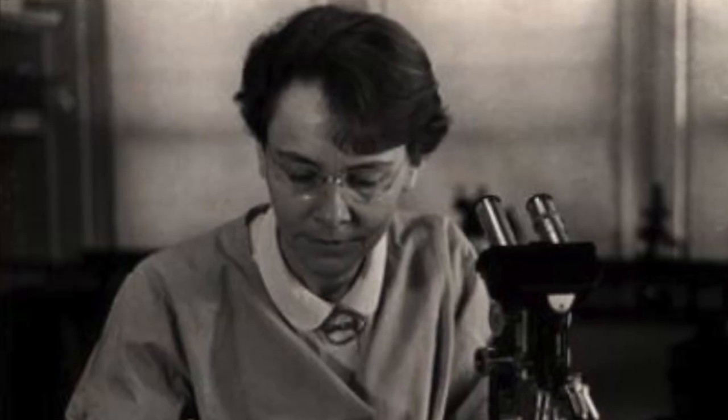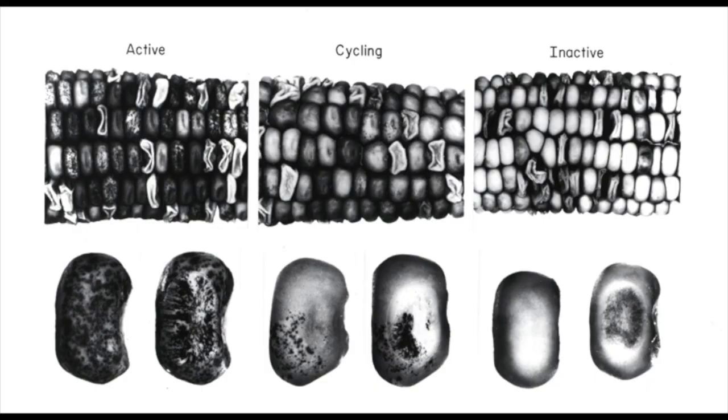Barbara McClintock is a scientist from the 1940s. She was very respected — she developed important techniques using microscopes, studying chromosomes, genetics, and all kinds of stuff. She basically hacked a corn plant and got it to evolve in real time. This paper by James Shapiro was explaining cellular error detection, error correction, and repair mechanisms — all things that communication engineers know about, things that are in your router or your cell phone.